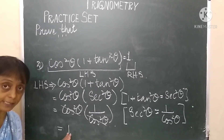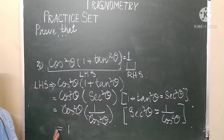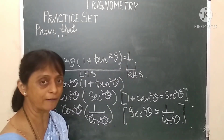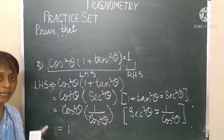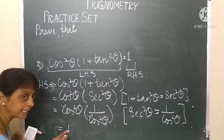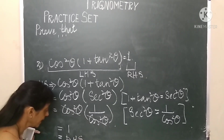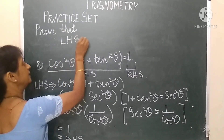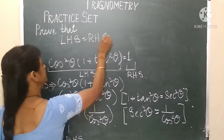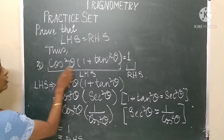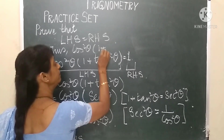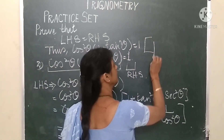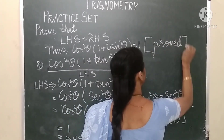We have reached a step where the final expression equals the right hand side. On the right hand side we have 1, and starting from the left hand side we also obtained 1. Therefore, left hand side is equal to right hand side. Thus, cos²θ × (1 + tan²θ) = 1 is proved.